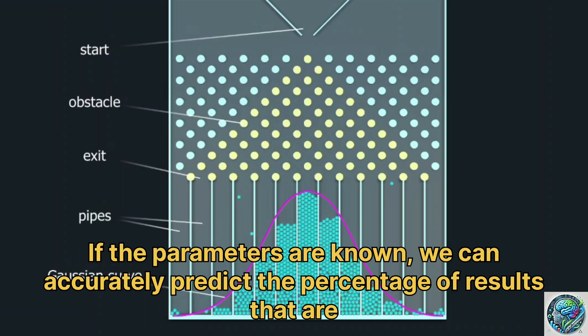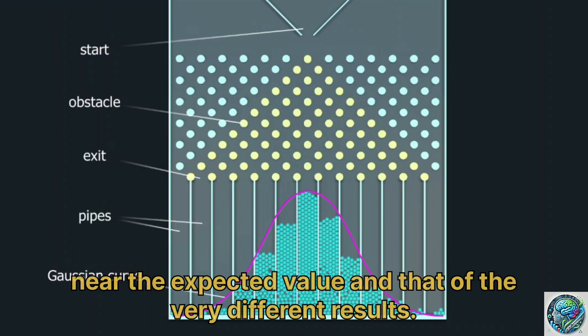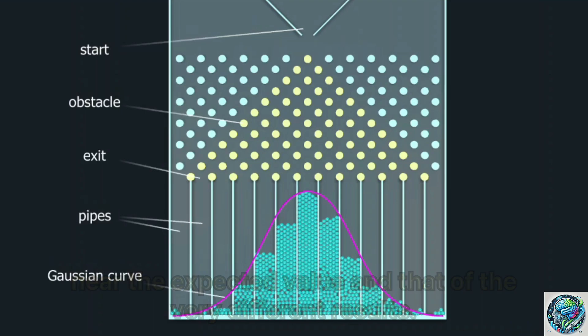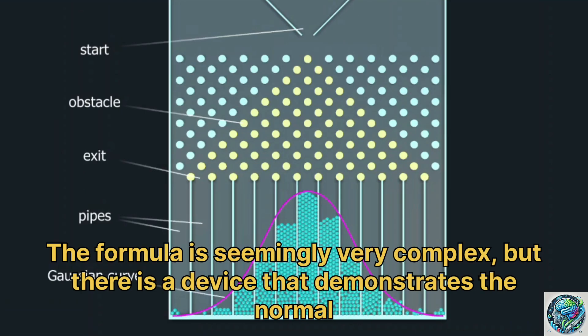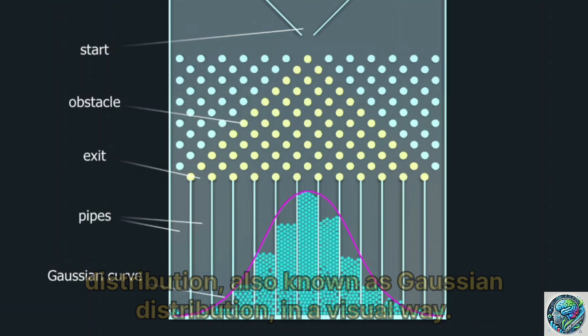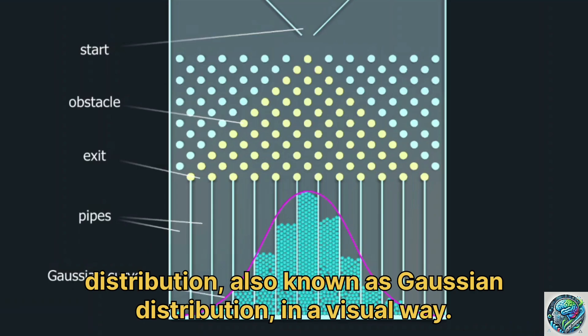If the parameters are known, we can accurately predict the percentage of results that are near the expected value and that of the very different results. The formula is seemingly very complex, but there is a device that demonstrates the normal distribution, also known as Gaussian distribution, in a visual way.